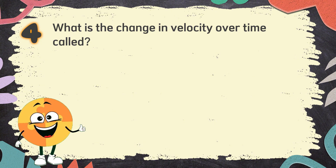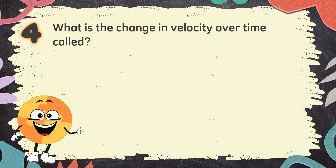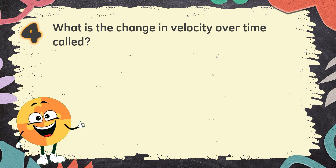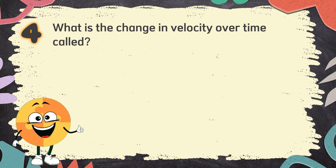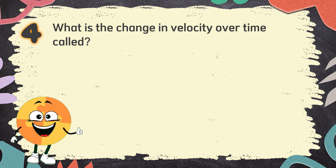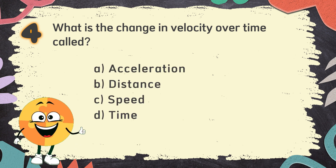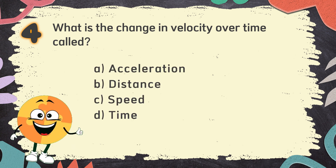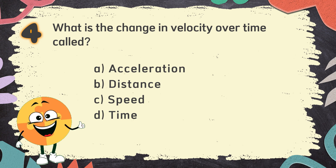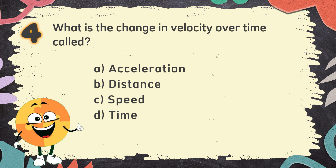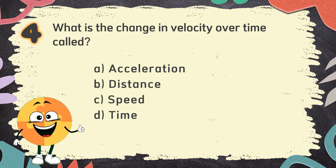Number 4. What is the change in velocity over time called? The choices are: A. Acceleration, B. Distance, C. Speed, D. Time.